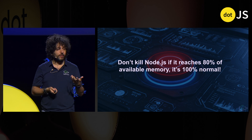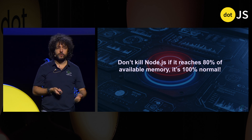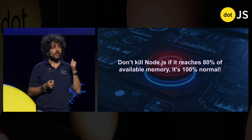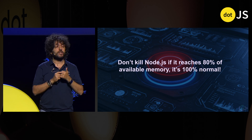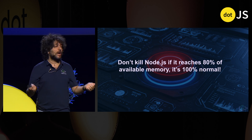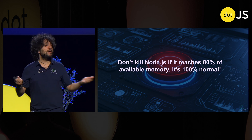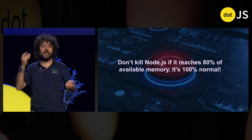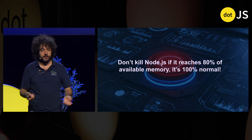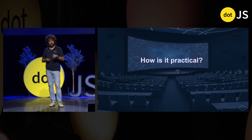The first thing to take away from this: don't kill Node.js if it reaches 80% of available memory. It's 100% normal. It doesn't mean you have a memory leak — it will take all the memory it can. So don't kill it.